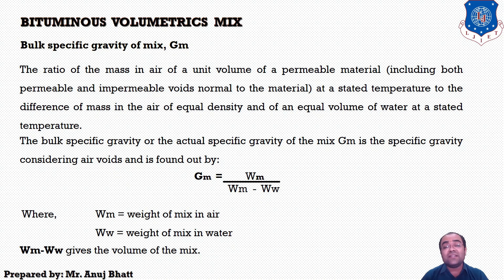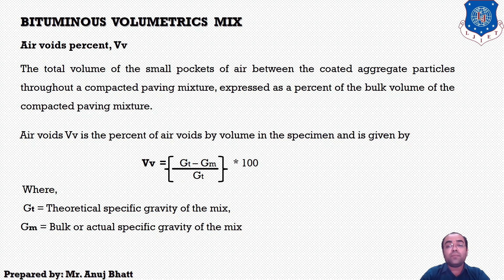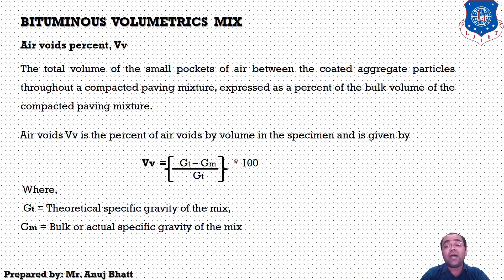The next volumetric is air voids percentage (vb). This is the total volume of small pockets of air between the coated aggregate particles throughout the compacted paving mixture, expressed as a percentage of the bulk volume of the compacted paving mixture. The amount of air voids in a mixture is extremely important and closely related to stability and durability. Air voids percentage is calculated by: vb = (gt − gm) / gt × 100, where gt is the theoretical specific gravity and gm is the bulk specific gravity of the mix.